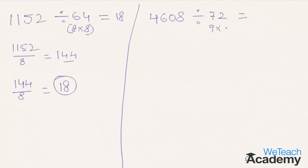Now 4608 should be divided with the first factor, that is 9. 4608 divided by 9, we get 512. Now the result 512 is to be divided with the second factor, that is 8. 512 divided by 8, we get 64.